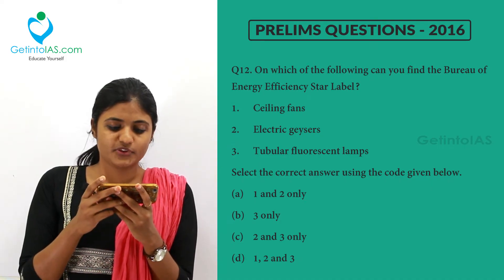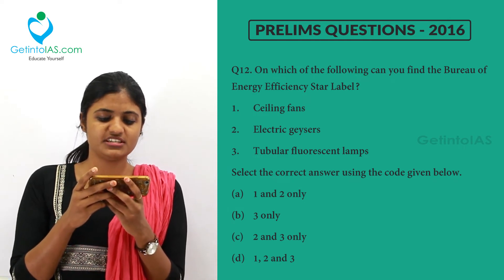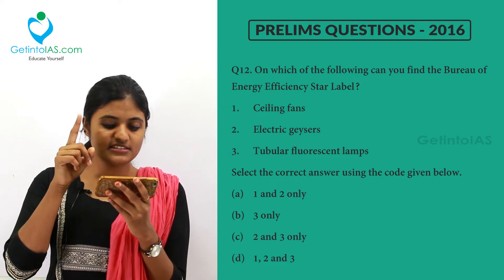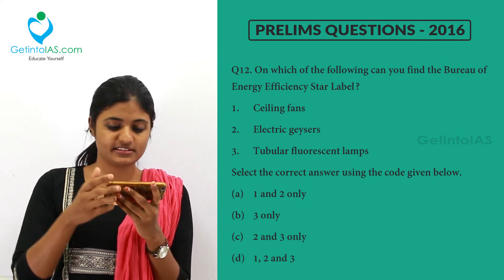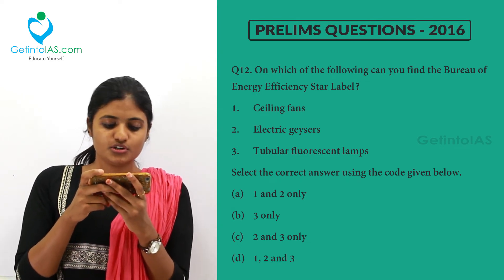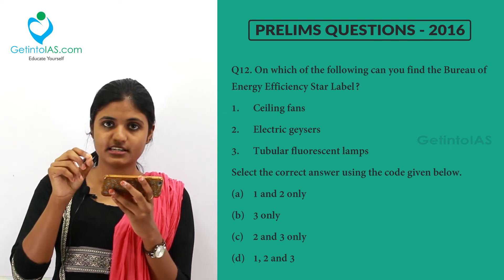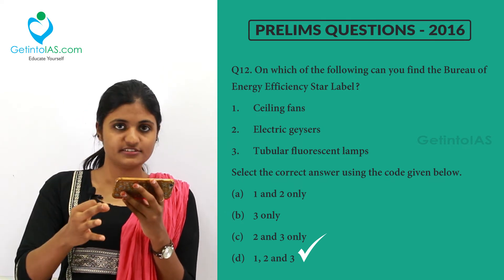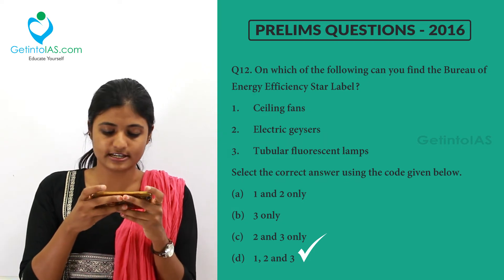On which items can you find the Bureau of Energy Efficiency (BEE) Star label? The options are ceiling fans, electric geysers, and tubular fluorescent lamps (tube lights). You can find the BEE ratings on most electrical equipment, especially ceiling fans, geysers, and tube lights. So option D — 1, 2, and 3 — is the correct answer.